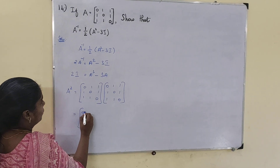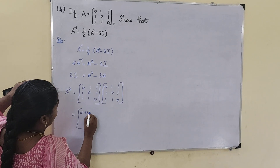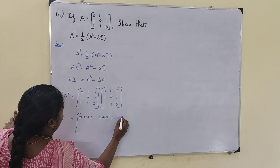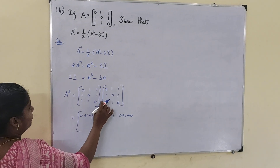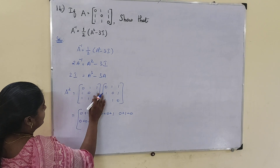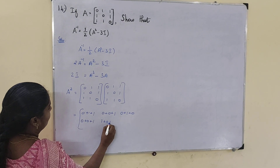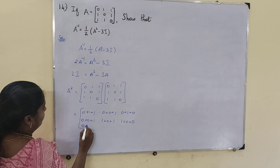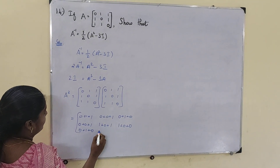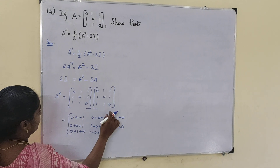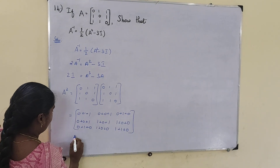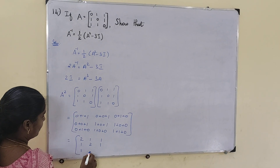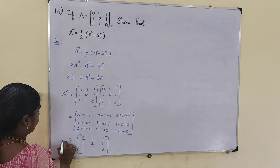Multiplying out: first row, first column: 0+1+1=2; first row, second column: 0+0+1=1; first row, third column: 0+1+0=1. Second row, first column: 0+0+1=1; second row, second column: 1+0+1=2; second row, third column: 1+0+0=1. Third row, first column: 0+1+0=1; third row, second column: 1+0+0=1; third row, third column: 1+1+0=2. So A square equals [2,1,1; 1,2,1; 1,1,2].